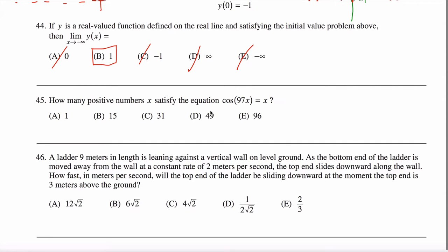All right. Problem 45. How many positive numbers x satisfy the equation cosine of 97x equals x?